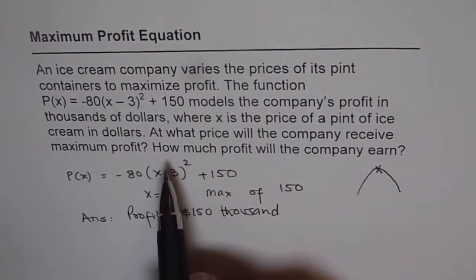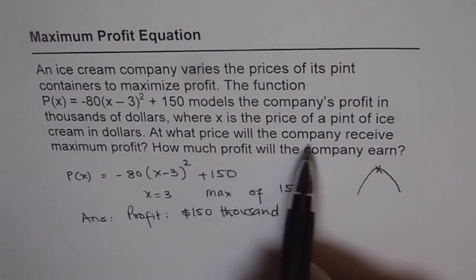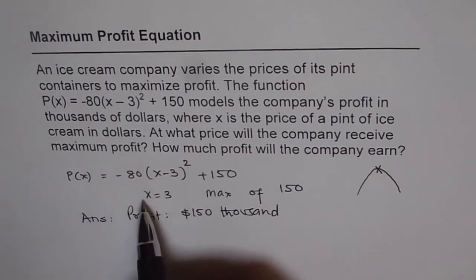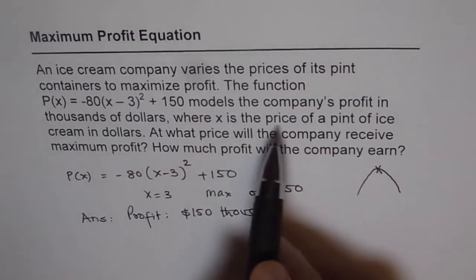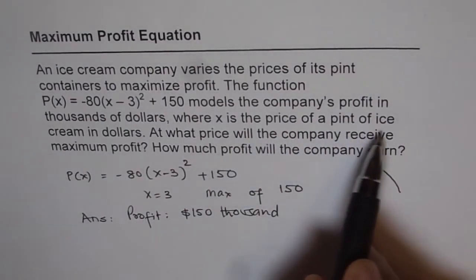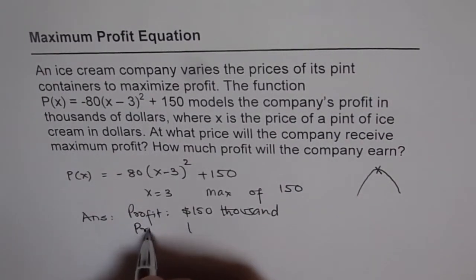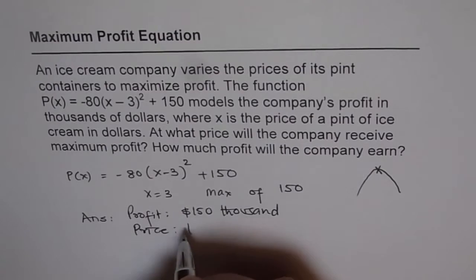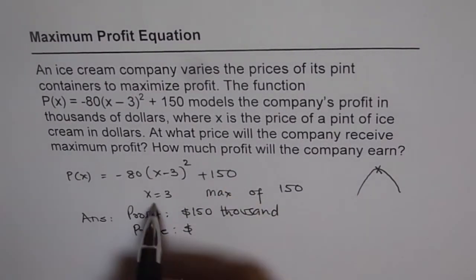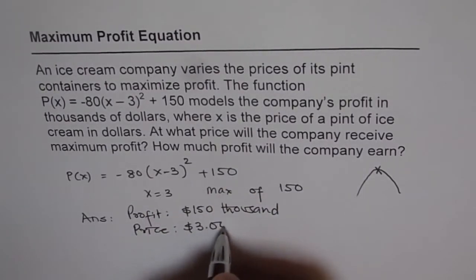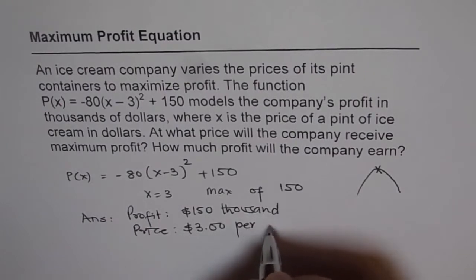And then at what price will the company receive maximum profit? The price is price of a pint of ice cream in dollars. So price is $3 per pint.